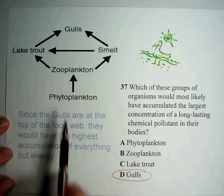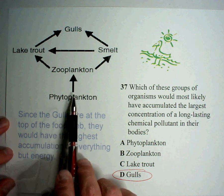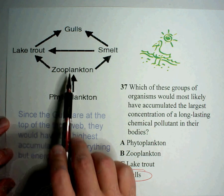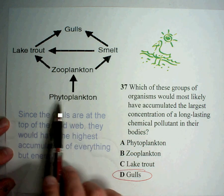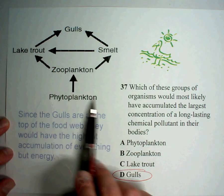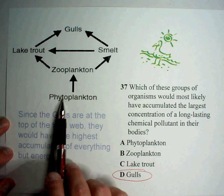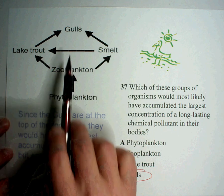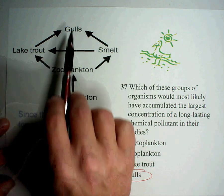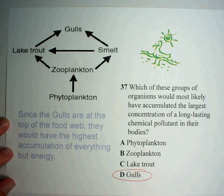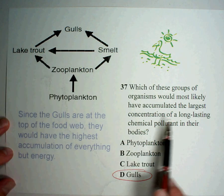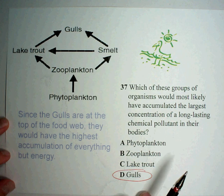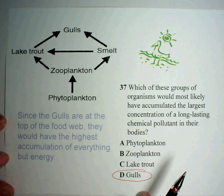Remember that the arrows point to who's going into whose stomach. Plants and producers are always on the bottom level, working up to your consumer groups. If you just look at your diagram and read the question carefully, you should easily be able to figure out the food webs.